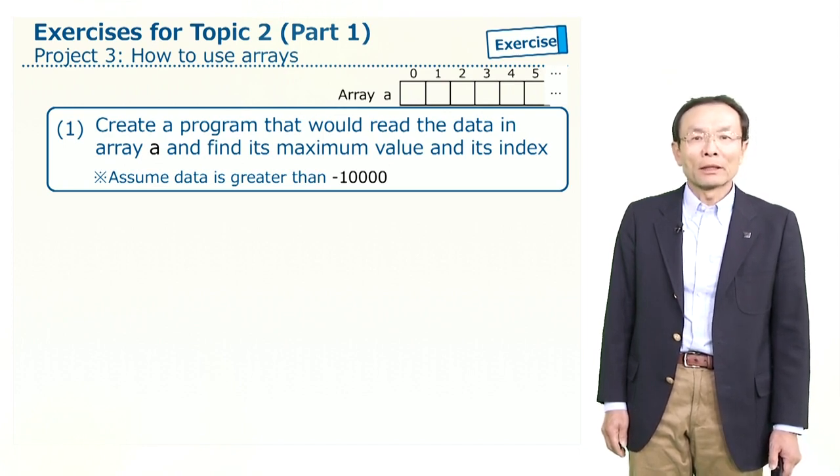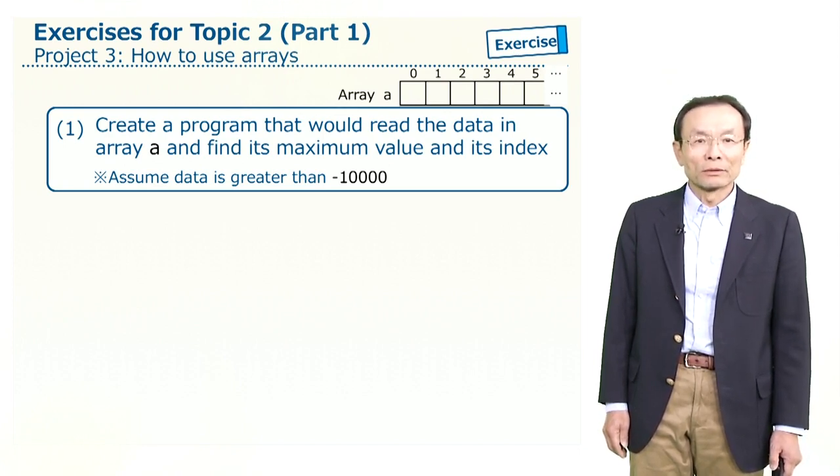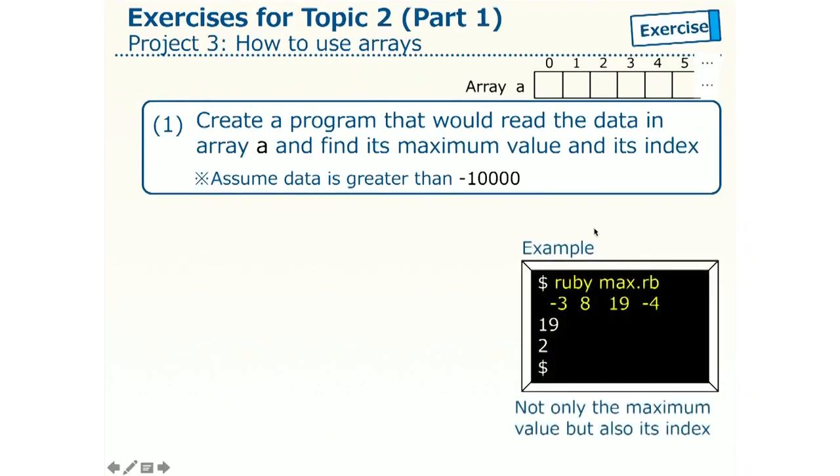Let us take a look at an example of such an execution. Here it is. Let us name the program max.rb. Once that is done and run it in Ruby, the computer will wait for the input. Then, for example, you type in minus 3, 8, 19, and minus 4, and hit enter.